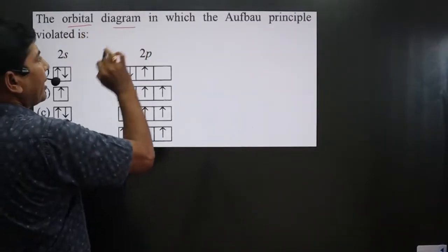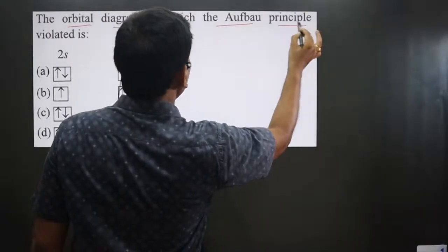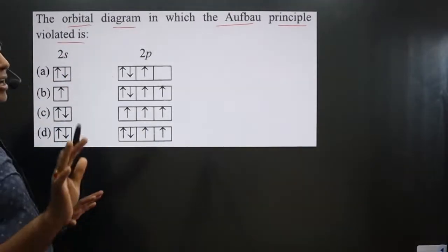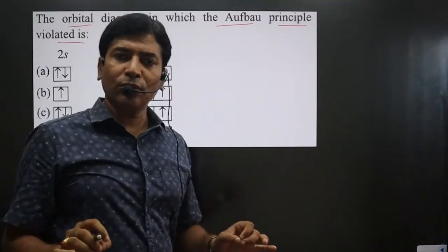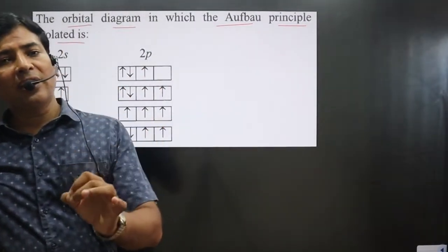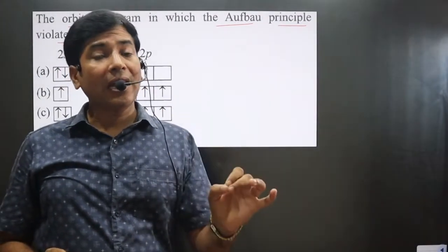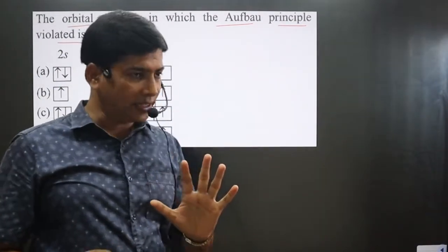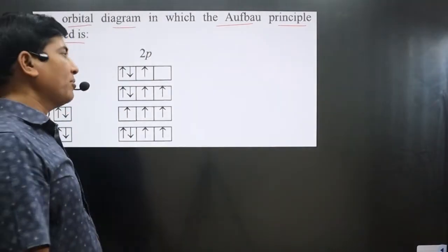The question says the orbital diagram in which the Aufbau principle is violated. Always keep in mind, according to the Aufbau principle, filling of electrons in orbitals is done in the increasing order of their energy. In the increasing order of their energy.